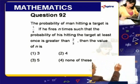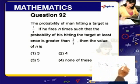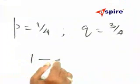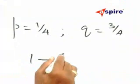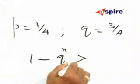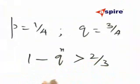Now, p is equal to 1 by 4, and therefore q is equal to 3 by 4. The given condition states that 1 minus (3/4) to the power n is greater than 2 by 3.